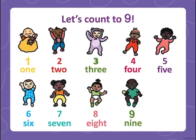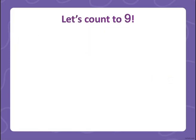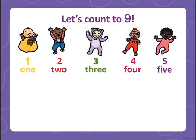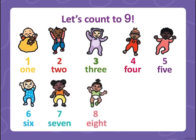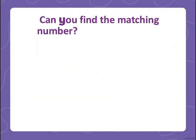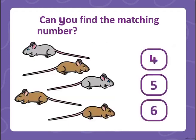So let's count the babies. Let's start: one, two, three, four, five, six, seven, eight, nine. We have nine babies. Now let's see how many there are — is it four, five, or six?